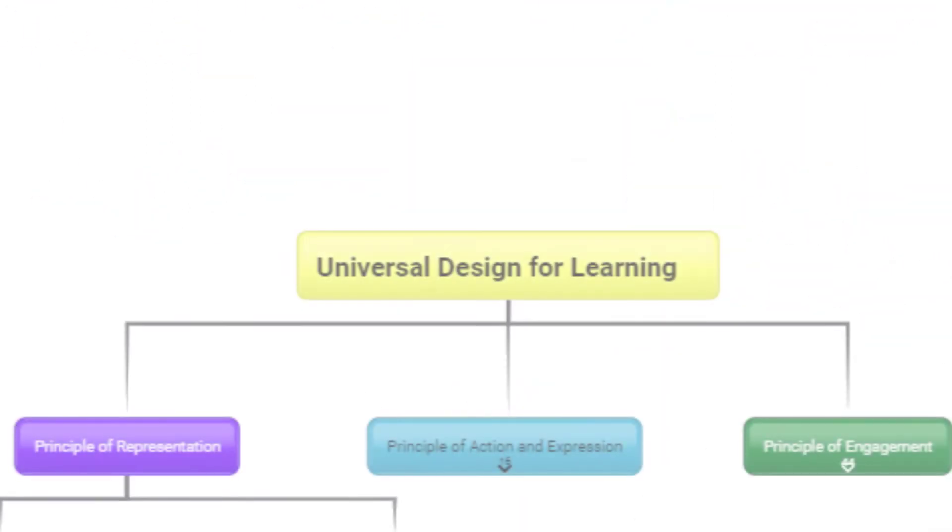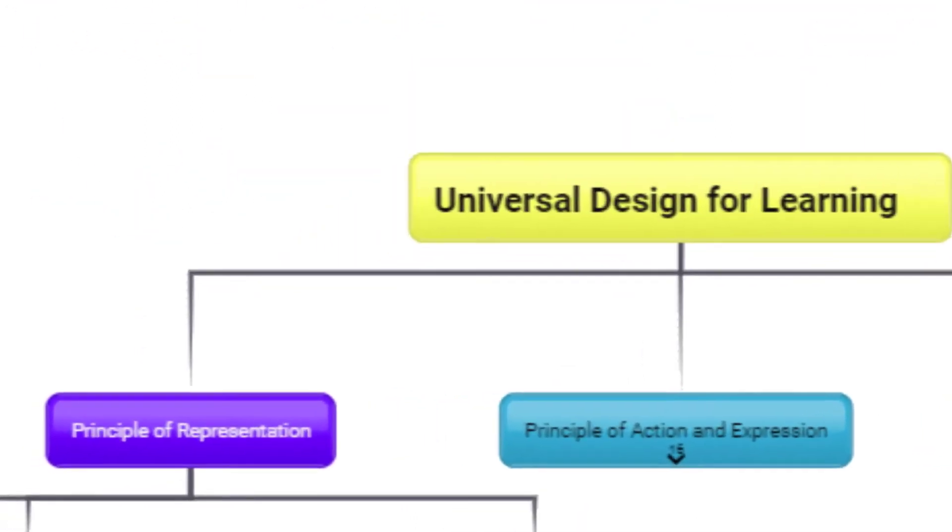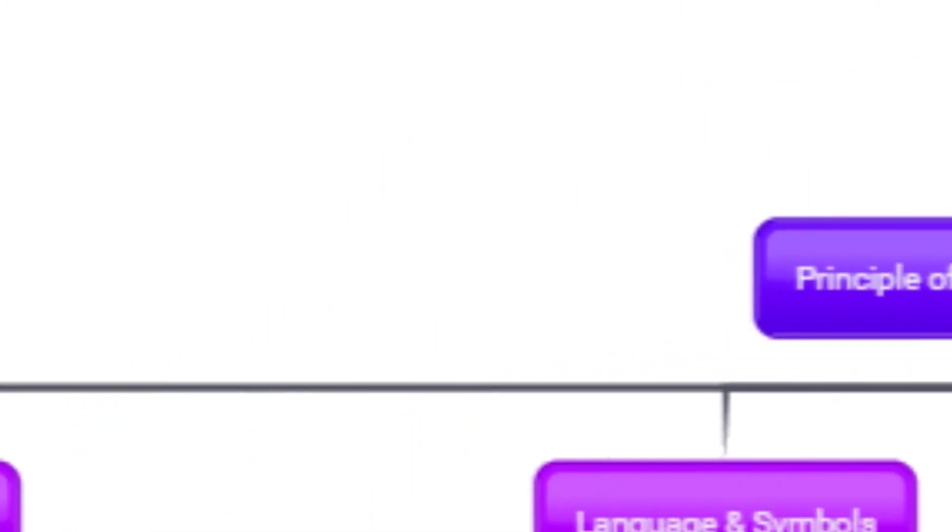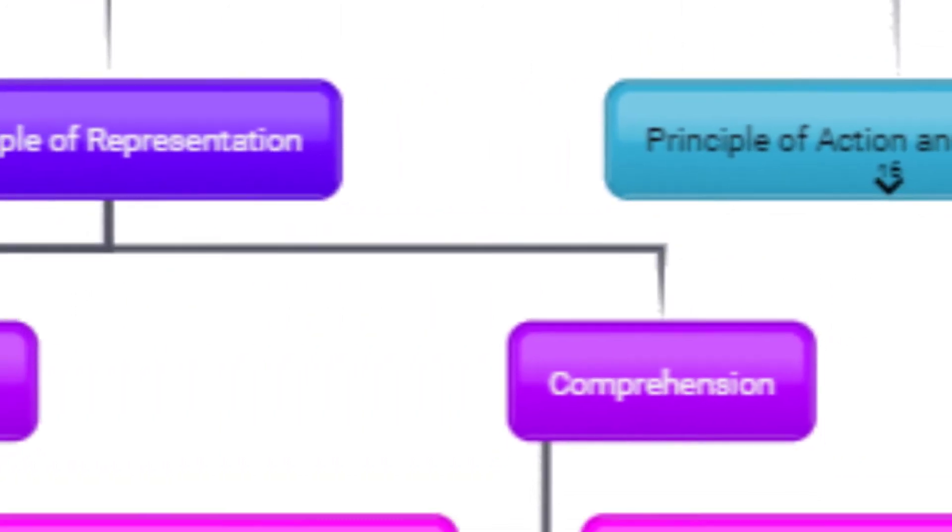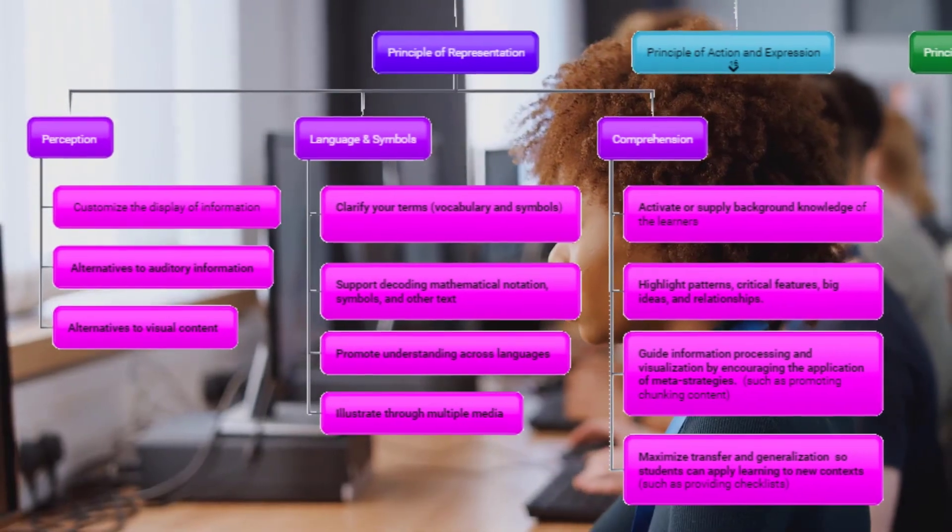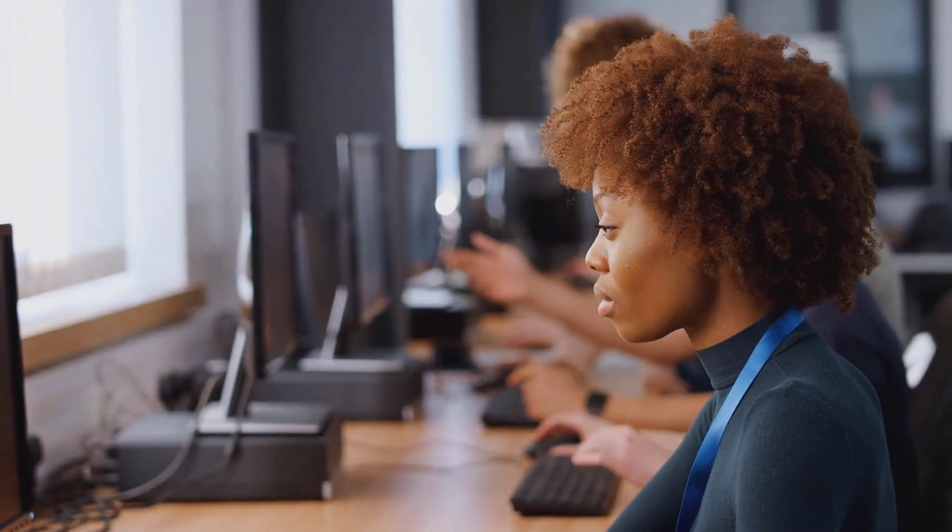There are three guidelines to follow when focusing on the representation of content. They are perception, language and symbols, and comprehension. Each of these guidelines, each with their own goals to meet, ensure the students have the best chance to understand what they need to learn.